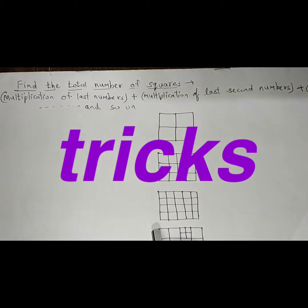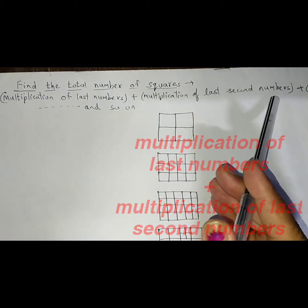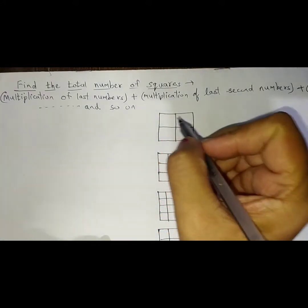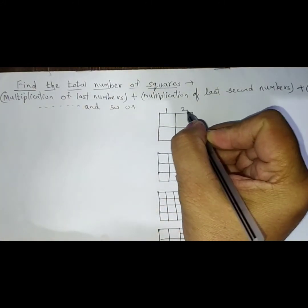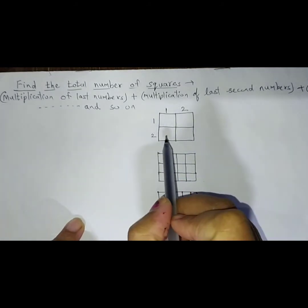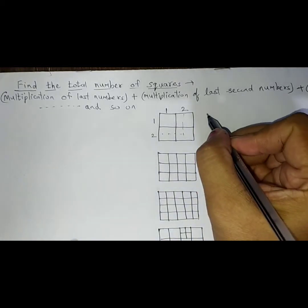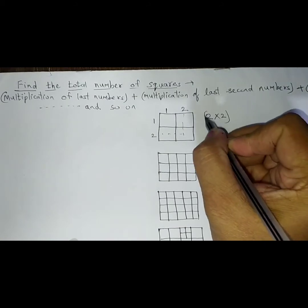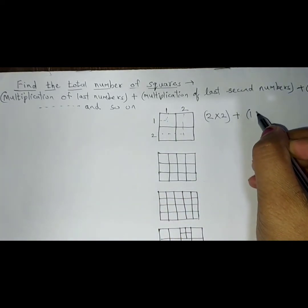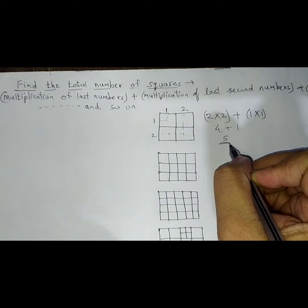Let's go by the simple step. Here we have to do multiplication of the last numbers plus multiplication of the last second numbers and so on. If this is the square, how many squares are formed? Just see this is 1 and this is 2. Horizontally we have named, now vertically 1 and this is 2. So the multiplication of the last number. So here we need to write 2 multiply by 2 plus last second numbers, after 2 you will find this is 1 into 1. So that is 1 multiply by 1. Here you get 2×2 is 4 plus 1×1 is 1, that is total 5 numbers of squares you will find.